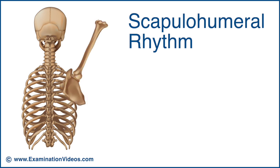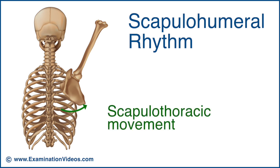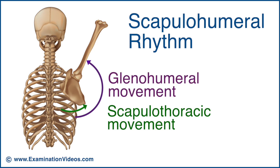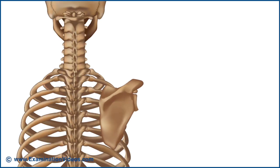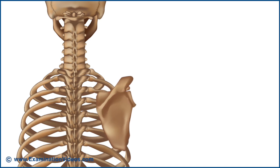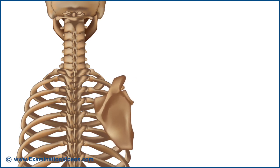Scapulohumeral rhythm is the coordinated movement of the scapula across the thoracic cage, called scapulothoracic movement, together with the movement of the humerus to the glenoid, or glenohumeral movement. Correct scapulohumeral rhythm is required to achieve full upper limb elevation. The scapula's superior rotation upon the thorax tilts the glenoid fossa upward, and this change in orientation accentuates the movement occurring at the glenohumeral joint.